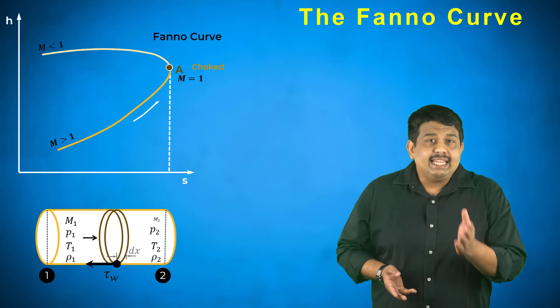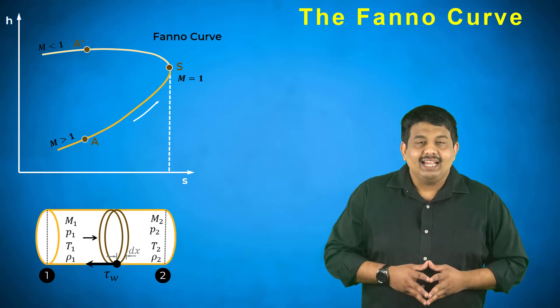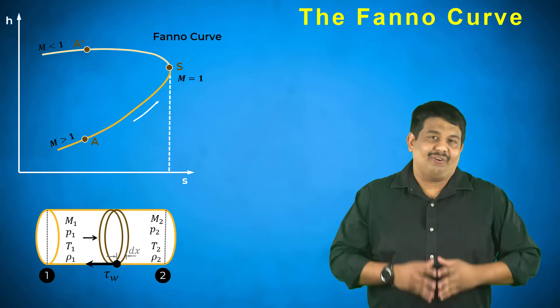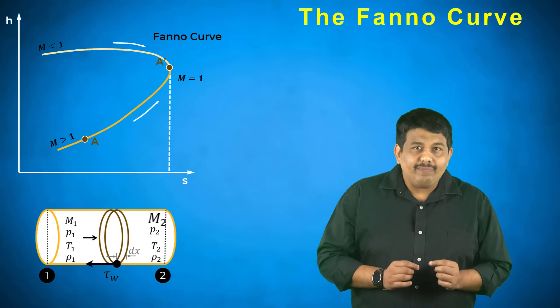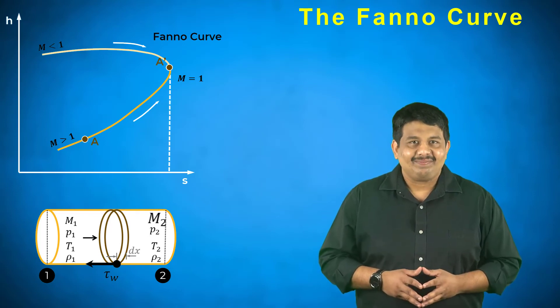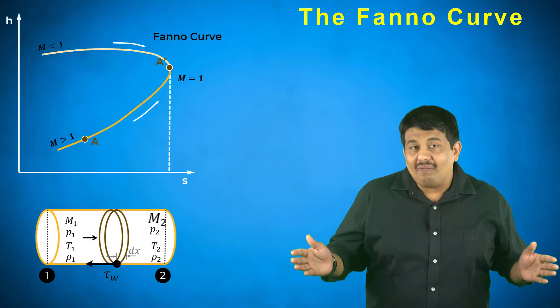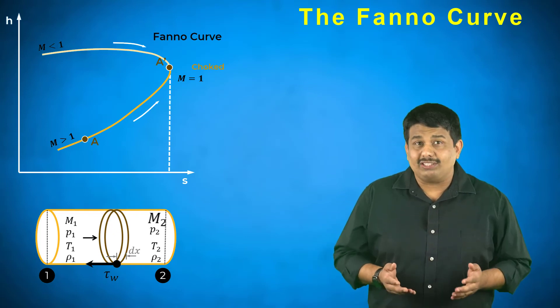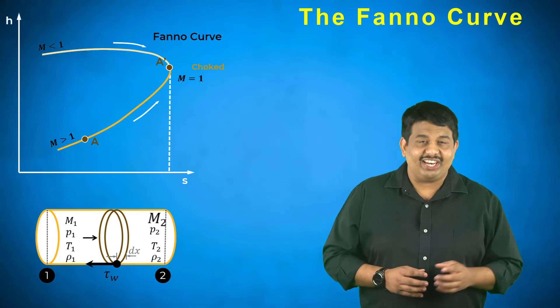Similarly, in the upper branch where the inlet flow is subsonic, the effect of friction is to accelerate the flow. At a critical length, the downstream flow in region B becomes sonic at point S. This flow is again choked and no further increase in length is possible without drastically changing the upstream flow conditions in region A.